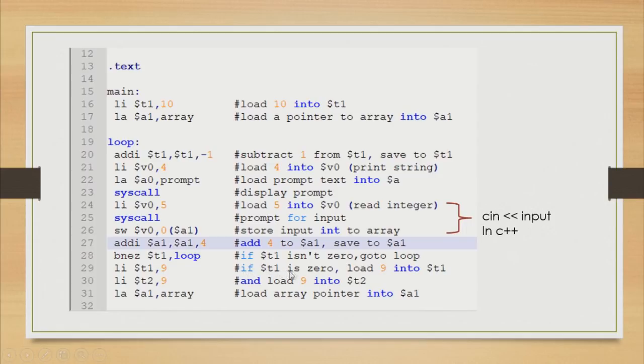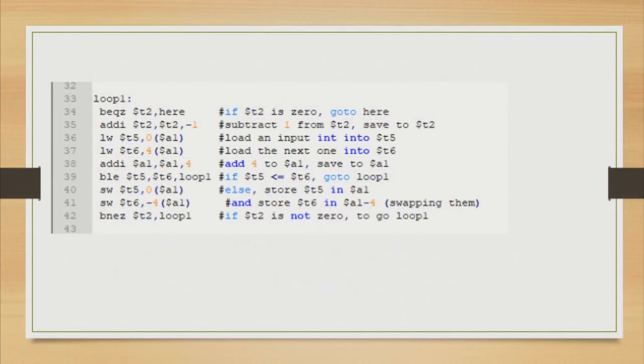If it is equal to 0, we need to load 9 into T1 and also into T2. We need to load array. Next, we move to loop 1 function.